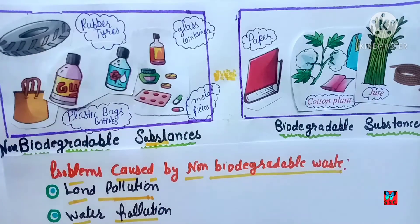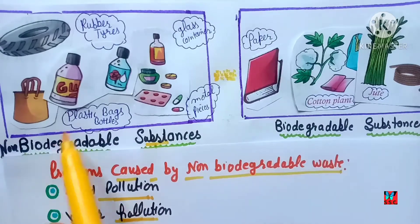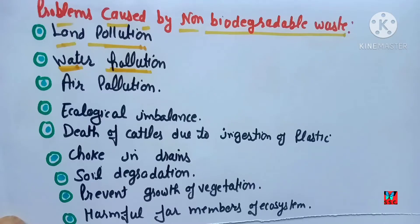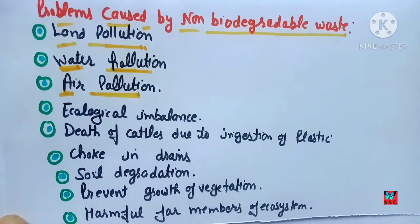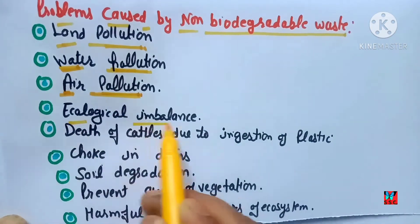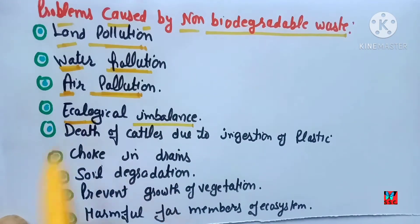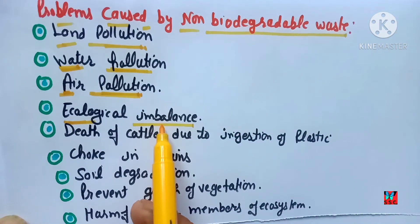Water pollution — when non-biodegradable waste such as dirt or ash goes into water, that water will not be drinkable, causing water pollution. Air pollution — when plastic bags are burned, harmful gases are released, causing air pollution. Ecological imbalance — non-biodegradable waste disrupts the ecosystem, which is the interaction between plants and animals, creating imbalance.